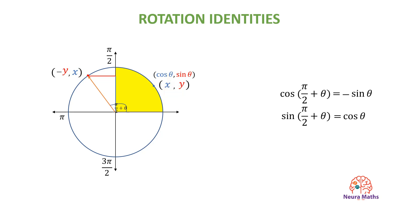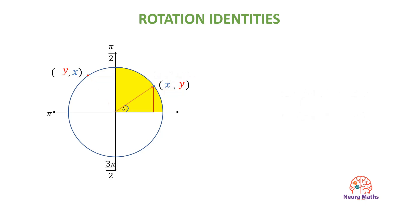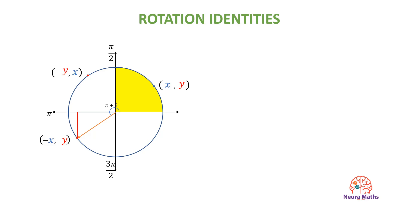What angle results from rotating angle theta by pi, or 180 degrees, around the origin? The angle resulting from rotating theta by pi around the origin is pi plus theta, which also results from a reflection across the origin and gives us negative x and negative y. So we will skip it now to avoid confusion.